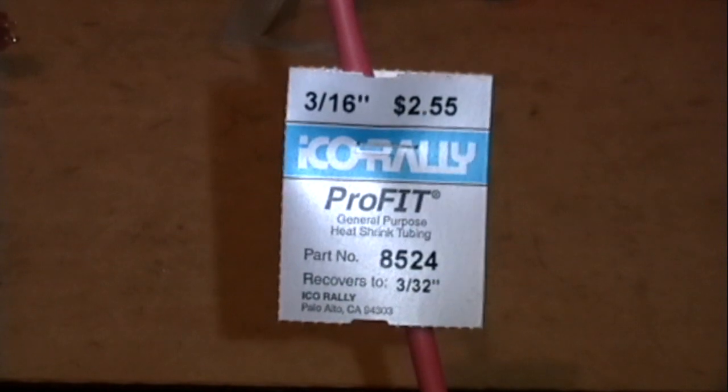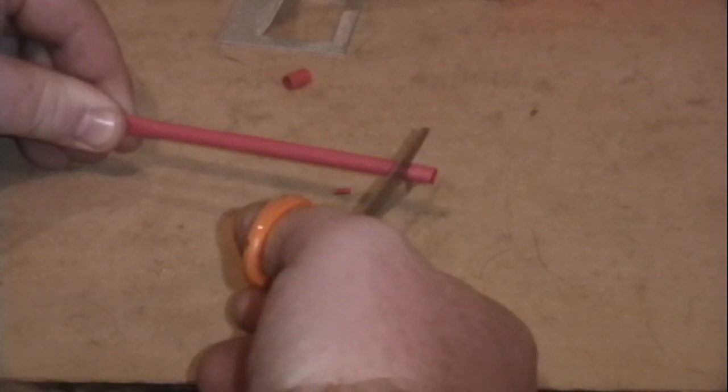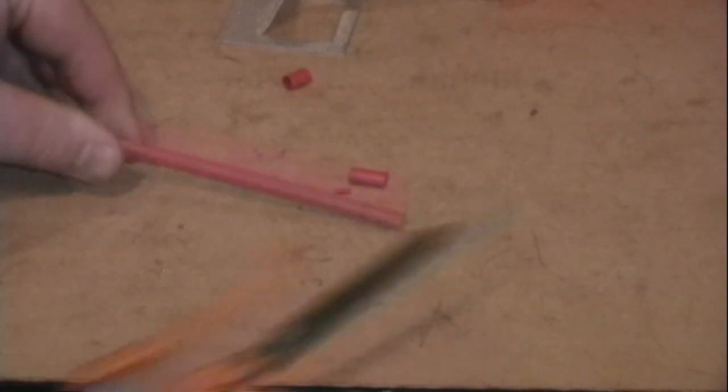Now we are ready to attach the wires. You want to make sure and always, always, always put your heat shrink on the wire before you attach it to the tab. Because obviously, once it's on the tab, you can't apply it anymore unless you desolder it, pull it off, then put it on. It's no fun.